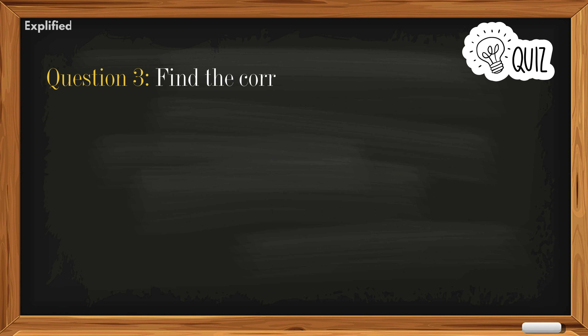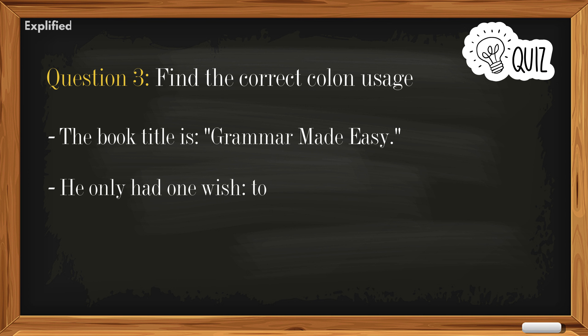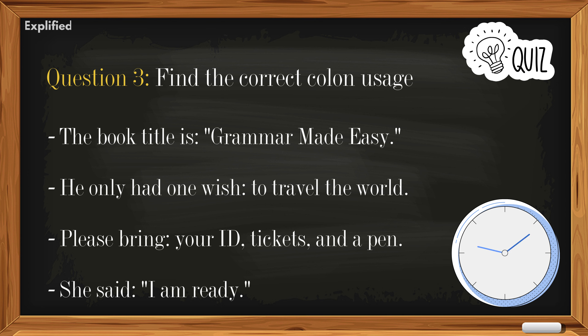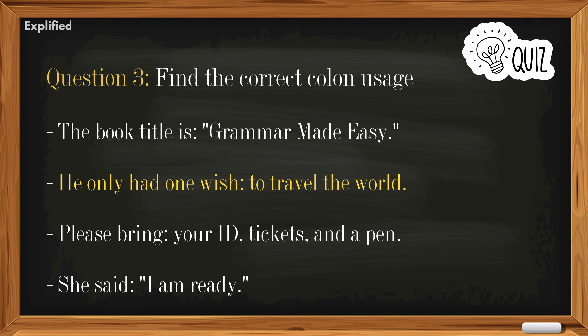Question three: Find the correct colon usage. A) The book title is, Grammar Made Easy. B) He only had one wish: to travel the world. C) Please bring your ID, tickets, and a pen. D) She said, I am ready. Answer: B) He only had one wish: to travel the world.